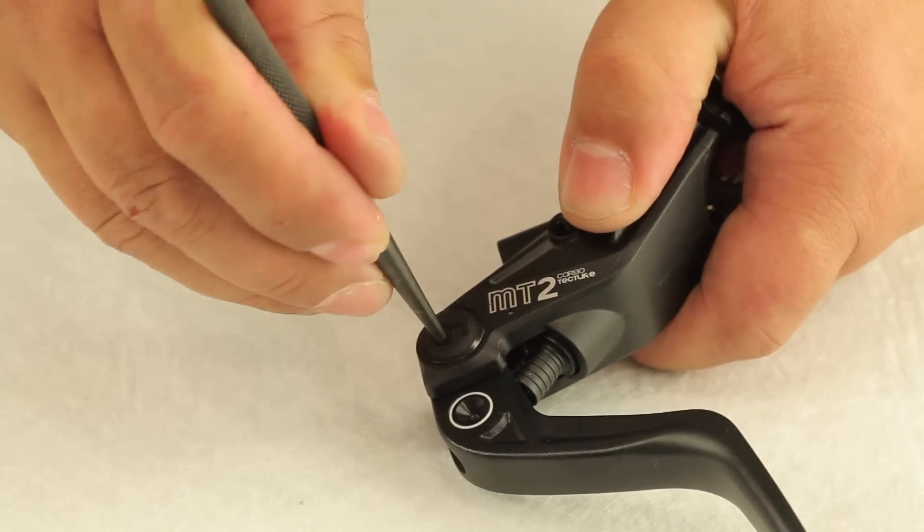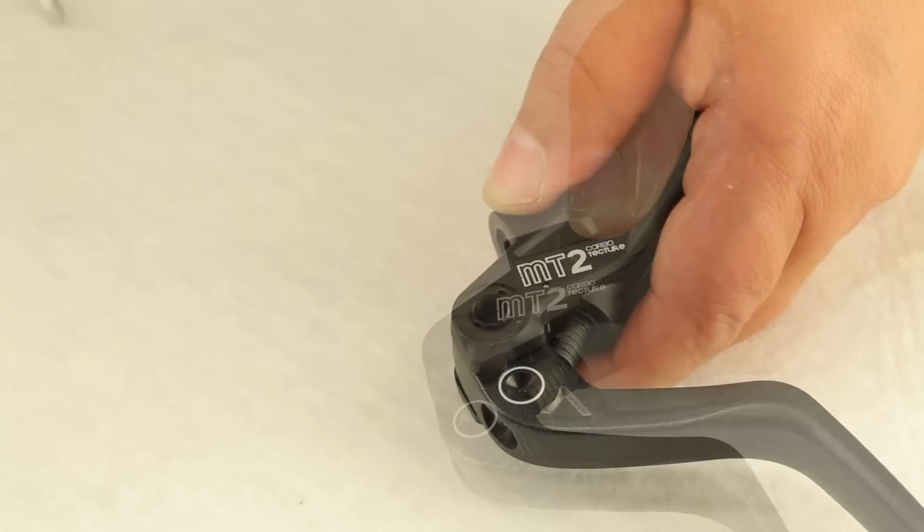Use a sharp or pointy tool to pick out one cover and then press out the opposite side with an allen key.